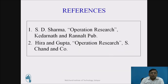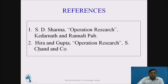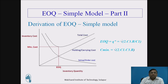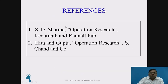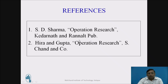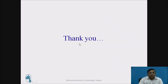This is how we have derived the equations for Economic Order Quantity and minimum inventory cost for a very simple model in inventory. As a reference, I have mentioned two books, but there are ample books available in Operations Research in general and even for inventory control. Thank you.